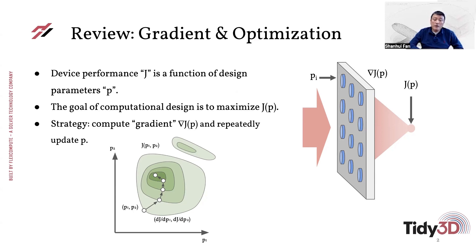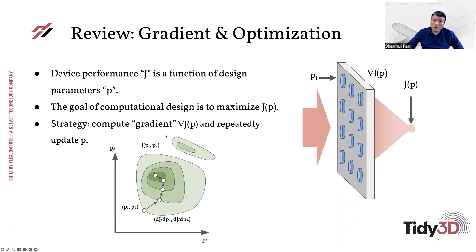For this focusing problem, you can imagine a cost function that measures device performance as the intensity of light at the focal region. The goal of computational design is to maximize the intensity of light at the focal point. For that purpose, you compute the derivative of this intensity at the focal point with respect to design parameters — for example, the radii of these cylindrical metaatoms. Once you know the gradient, you move in parameter space along the gradient direction until you reach an optimum.